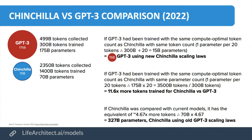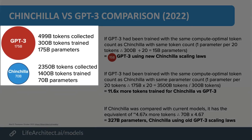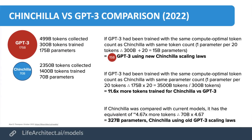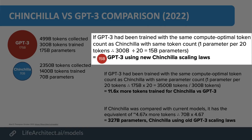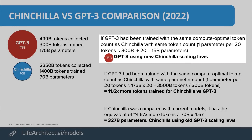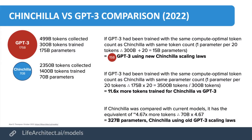Let's look at the technical details. The Chinchilla scaling laws were announced in 2022. Comparing Chinchilla with GPT-3: GPT-3 was trained with 300 billion tokens and had 175 billion parameters. Chinchilla was trained with 1,400 billion tokens — over 4x more — but only had 70 billion parameters, because they chose to use those tokens more efficiently. If GPT-3 had been trained with the same compute-optimal token count as Chinchilla, at about one parameter per 20 tokens, it would have only had 15 billion parameters.